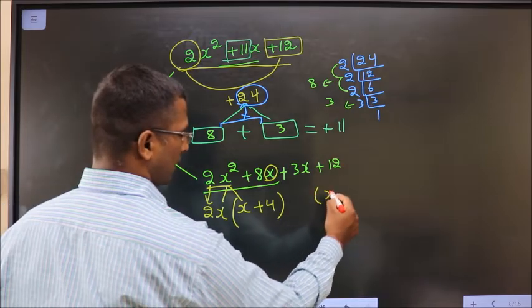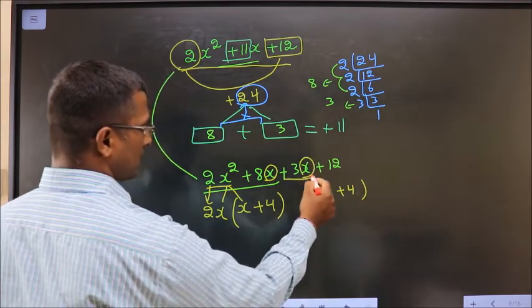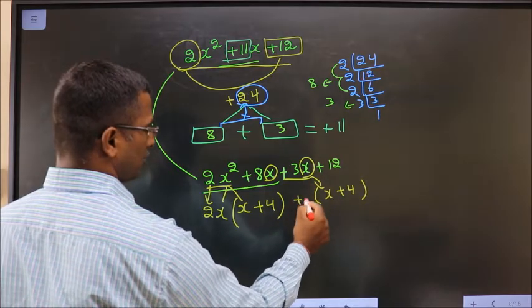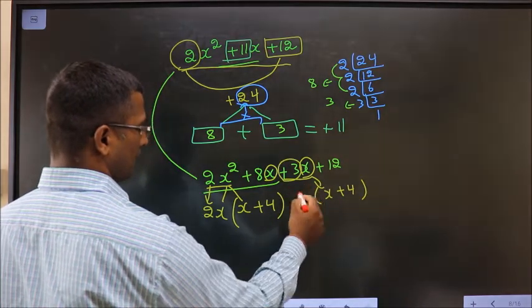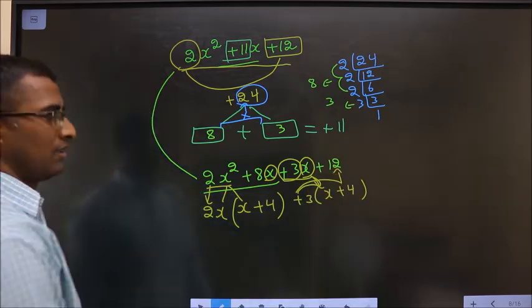Here you got x plus 4, so here also it should be x plus 4. From this 3x, x has gone inside, so outside should be plus 3. Even if I multiply, I get the same thing back.